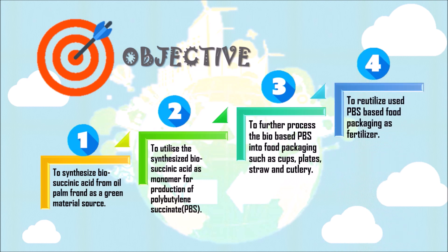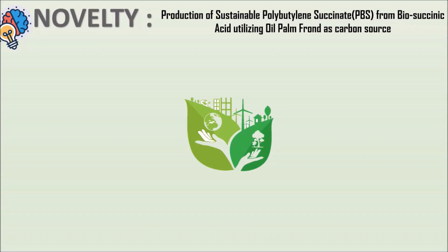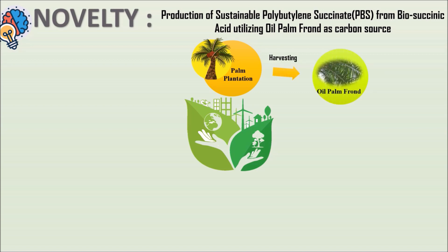And lastly, to re-utilize used PBS-based food packaging as fertilizer for commodity crops. The uniqueness of this project is demonstrated in this eco-friendly cycle. First, the OPF is generated during harvesting of the fruit bunches in oil palm plantation. After certain pre-treatments, the OPF undergoes fermentation, thus producing succinic acid.